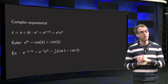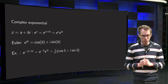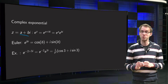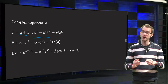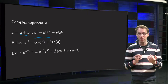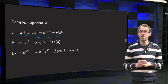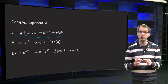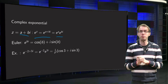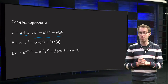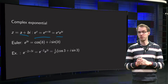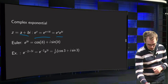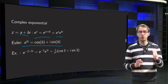So how can we compute e to the power z? Suppose we have a complex number z equals a plus b times i. Then e to the power z equals e to the power (a + bi), which we define as e to the power a times e to the power bi. Since a is real, e to the power a is fine. For e to the power bi we have Euler's formula: e to the power bi equals cosine b plus i times sine b.